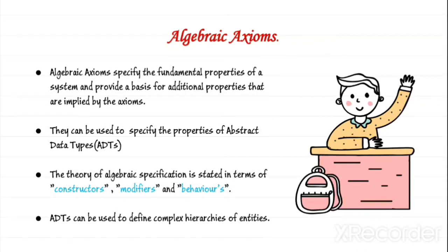They can be used to specify the properties of abstract data types, also known as ADTs. The theory of abstract specification is stated in terms of constructors, modifiers, and behaviors. ADTs can be used to define complex hierarchies of entities.